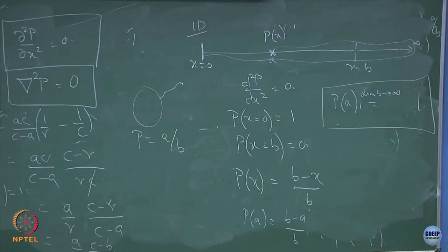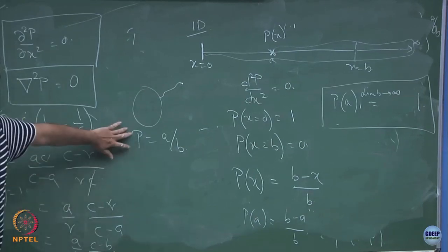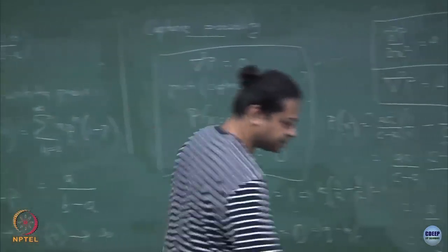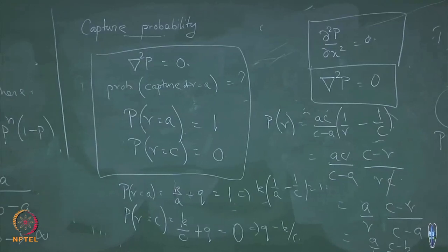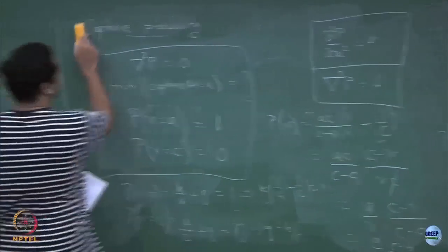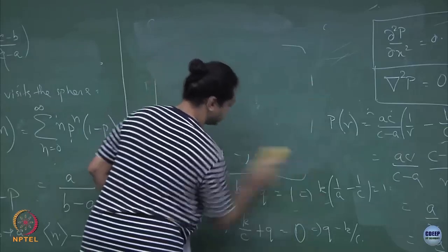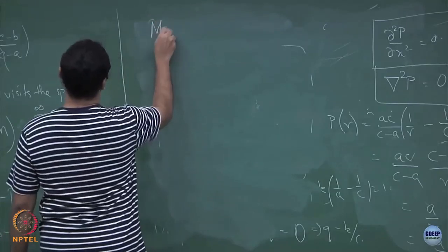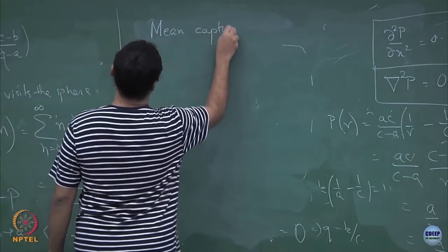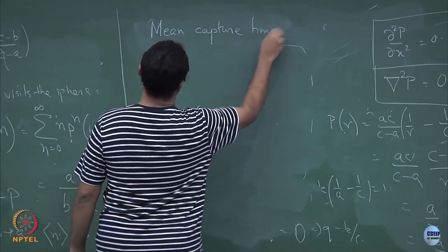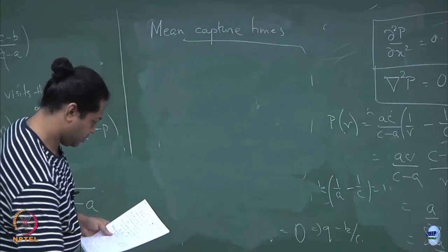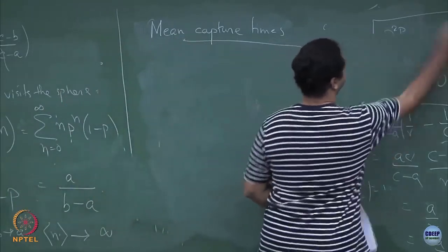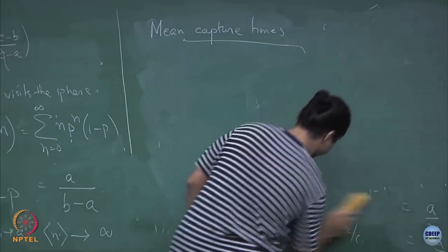Now let us ask a related question. I have calculated the capture probability — what is the probability that a particle will get captured? Let me ask a related question: how long will it take to get captured? So let us define the mean captured time. I will derive it in 1D and then generalize it.